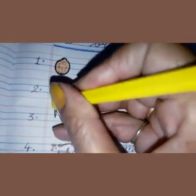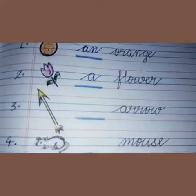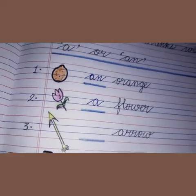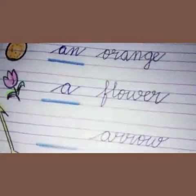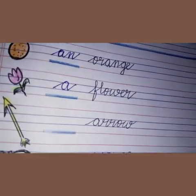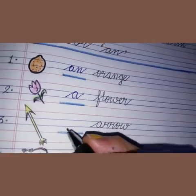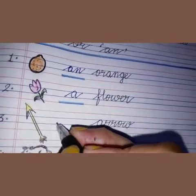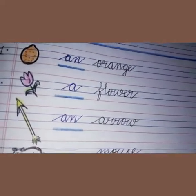Our next picture is of an arrow. Here I have written the word A-R-R-O-W — arrow. And A is a vowel, so what will we write? We will write AN here. An arrow.